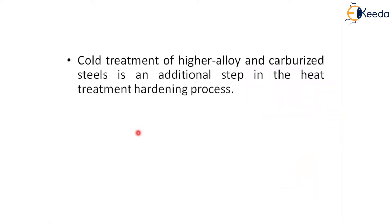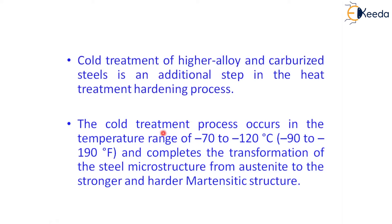Cold treatment for higher alloy and carburized steels is an additional step in the heat treatment hardening process. After carburizing — where carbon is added to steels to increase hardness — once that step is completed, you can go for cold treatment, which is the sub-zero heat treatment process. The temperature range is approximately minus 72 to minus 120 degrees centigrade, which completes the transformation from austenite to martensitic structure — a harder and stronger structure.